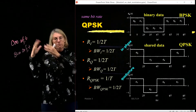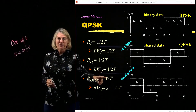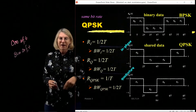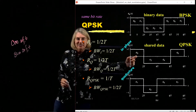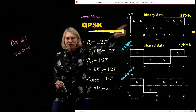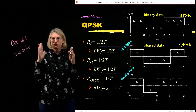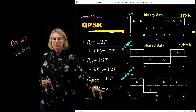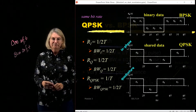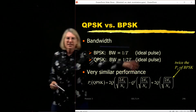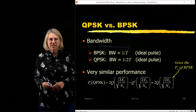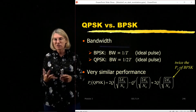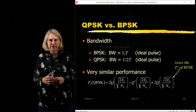The bandwidth occupied is 1/2T because these two are sent in parallel. They're 90 degrees out of phase so they're separable - orthogonal but right on top of one another. This is why going from BPSK to QPSK, I'm sending information at the same bit rate but occupying half the bandwidth, because stretching to cover two bit intervals makes the signal narrower in the frequency domain. So going from BPSK to QPSK, the bandwidth is halved: for BPSK it was 1/T, and for the same bit rate in QPSK it's 1/2T.